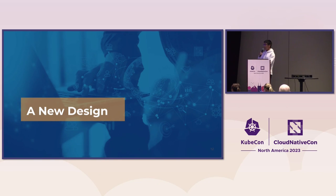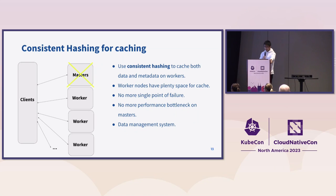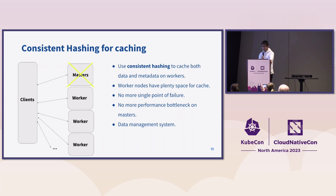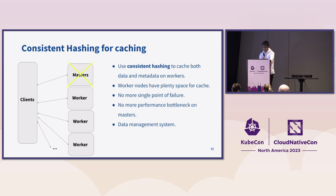Now let's talk about the new design. The new design involves using consistent hashing for caching data. We completely removed the masters which were responsible for storing all the metadata of the files. Instead, we now use consistent hashing to cache both data and metadata on worker nodes. The worker nodes have plenty of space for cache because we can horizontally scale them. With no more masters, there's no more single point of failure and no more performance bottleneck, and the system has data management functionality.